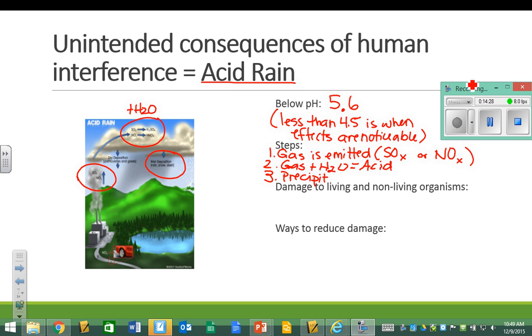And the idea is that when those gases mix with water, that is when we can get an acid being formed. And then, of course, the third step would be the actual precipitation. So, it would go 1, 2, 3. And now that that precipitation is falling, instead of it being just water, now it is an acid.